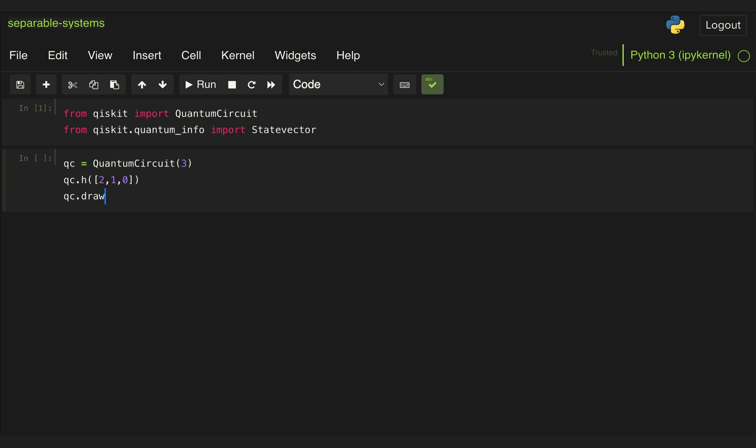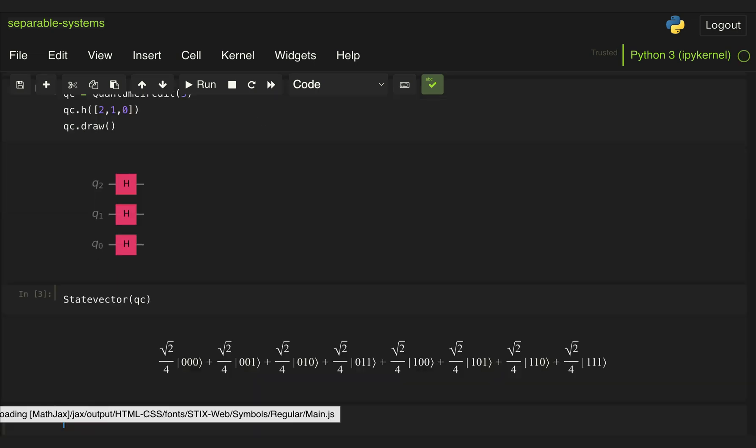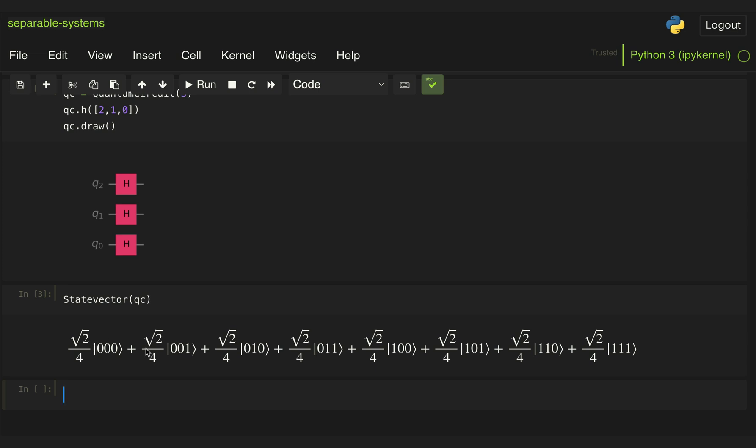Let's go ahead and draw that circuit. And then if we look at the state vector for that circuit, we see that we get an equal superposition of all possible combinations of three qubits.